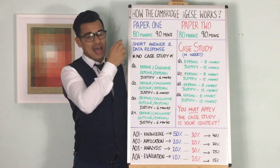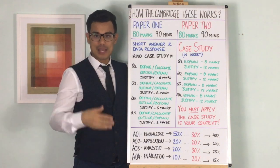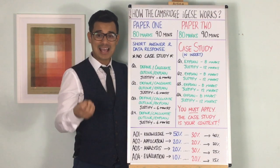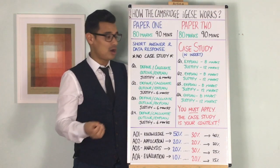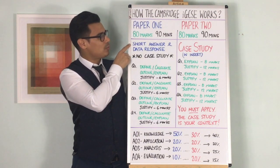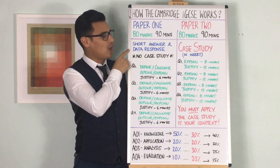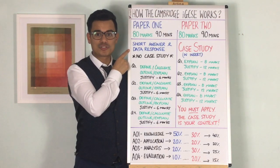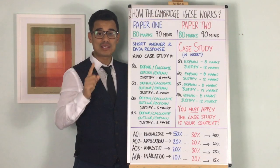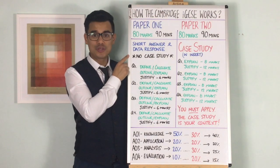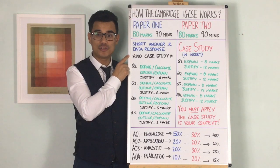Paper 1 is a 90-minute paper, worth 80 marks. In terms of how the paper works, it will be lots of short answer questions and data response questions, and the key thing is there is no case study that you'll be referring to.